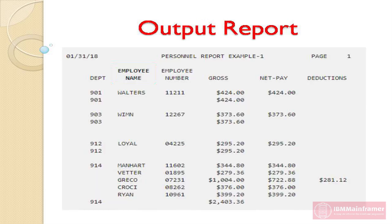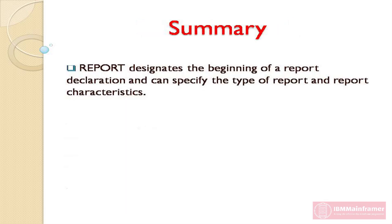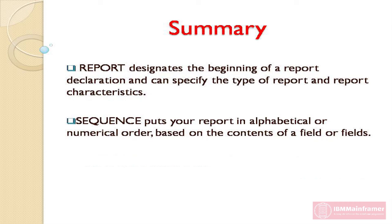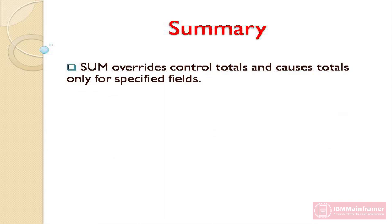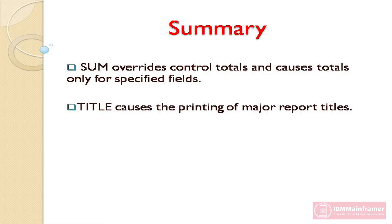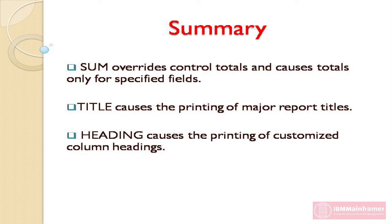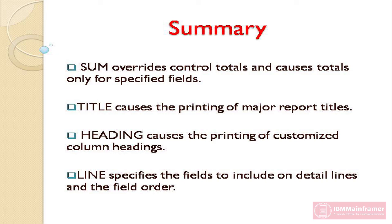This is how the detail line looks in your report. Finally, we are at the end of our video. You have learned how the Report, Sequence, Control, Sum, Title, Heading, and Line statements are used in the creation of an EasyTrieve report. Report designates the beginning of a report declaration and can specify the type of report and report characteristics. Sequence puts your report in alphabetical or numerical order based on the contents of a field or fields. Control causes a control break based on the contents of a field; it causes the printing of control totals and grand totals for all quantitative fields. Sum overrides control totals and causes totals only for specified fields. Title causes the printing of major report titles. Heading causes the printing of customized column headings. Line specifies the fields to include on detail lines and the field order.